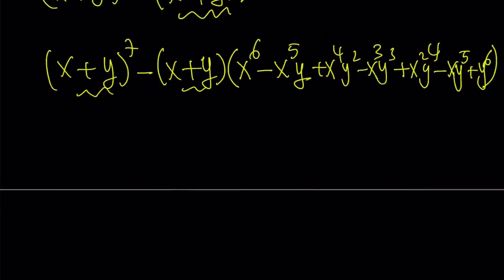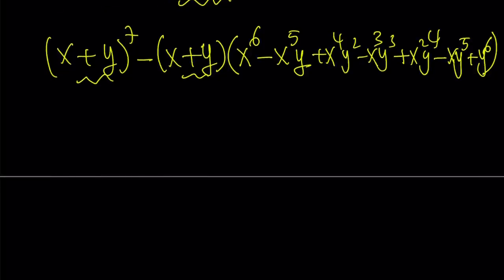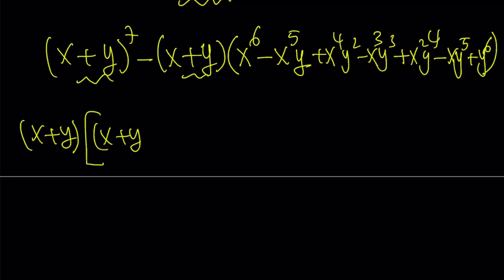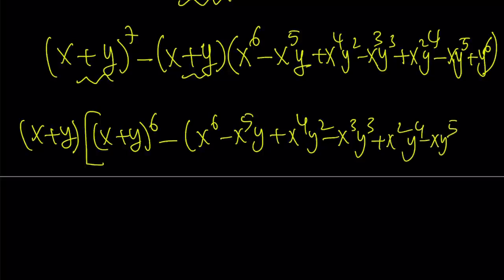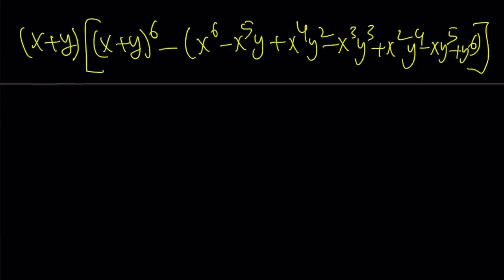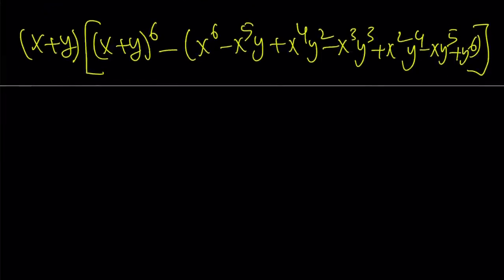Notice that both of these have x plus y as a common factor, so we can take that out. From here, we're going to get x plus y to the sixth power minus the quantity x to the sixth minus x to the fifth y plus x to the fourth y squared minus x cubed y cubed plus x squared y to the fourth minus x y to the fifth plus y to the sixth.